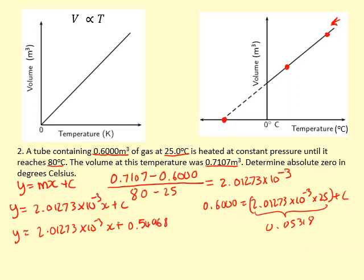Now what I want is the x-intercept, so I need to set y equal to zero. If I set y to equal zero, I can bring this to the other side, so it becomes -0.54968 equals 0.00201273 times x. Rearranging that, you should get x equals -273.1°C, which is absolute zero.